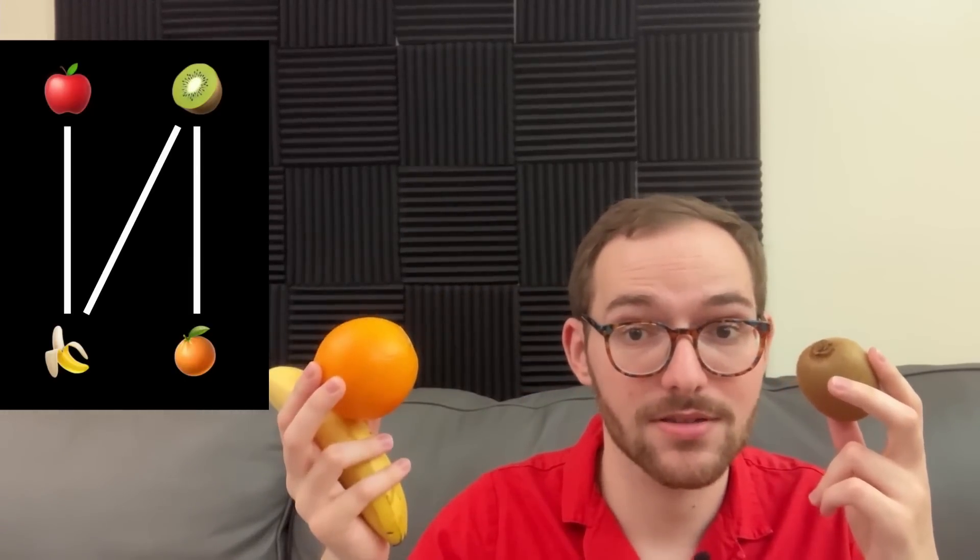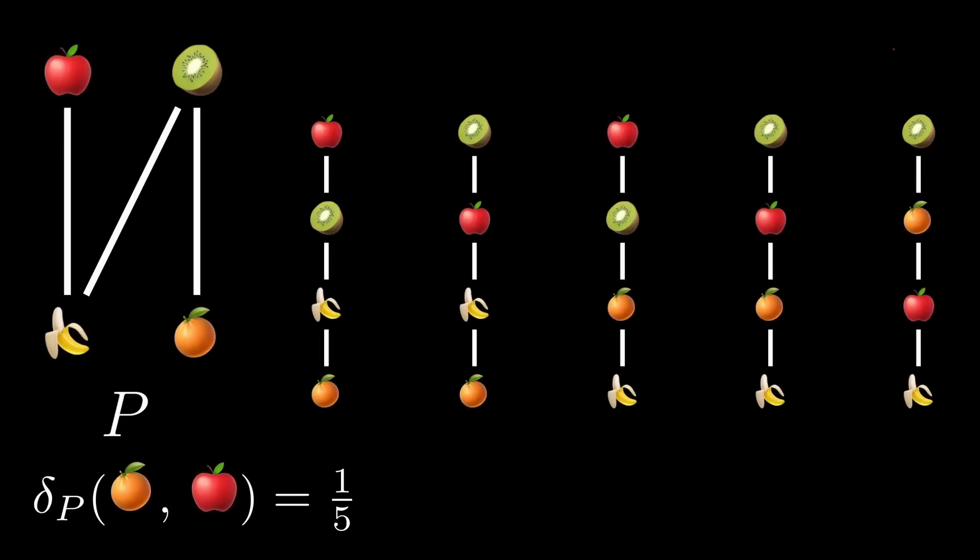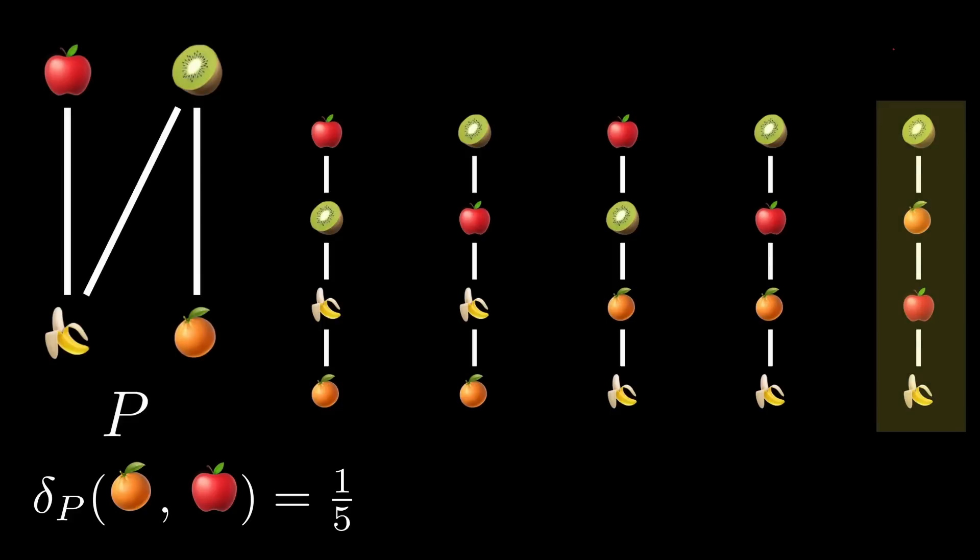Let's look at another example. I still prefer apples to bananas, but now let me tell you how I feel about kiwis. I prefer kiwis to both bananas and oranges. Now the sorting probability of oranges over apples has dropped to one-fifth, because I only prefer oranges over apples in one out of the five possible linear extensions.